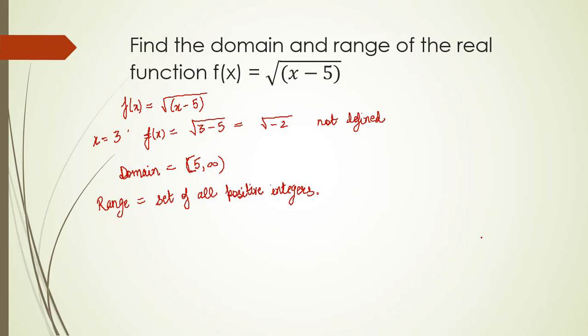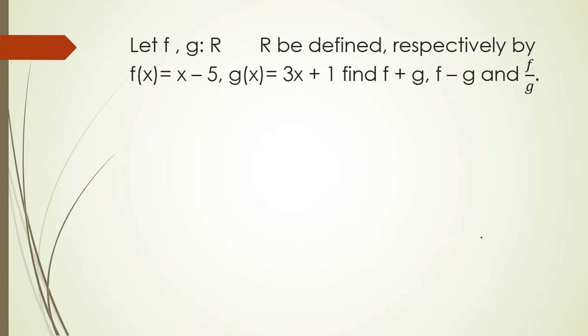Let's move on to the next question. Let f and g be two functions defined on R to R, as f(x) equals x minus 5 and g(x) equals 3x plus 1. We have to find f plus g, f minus g, and f over g. So to find f plus g...